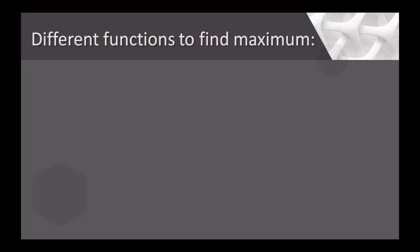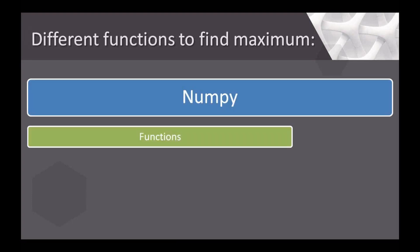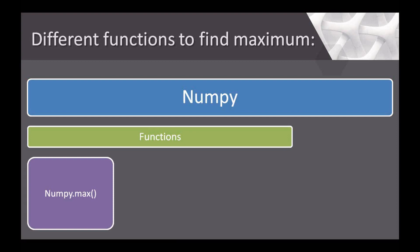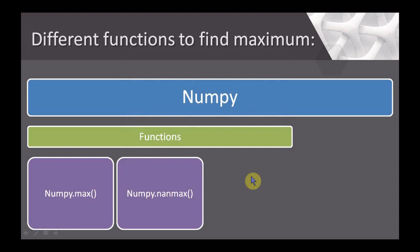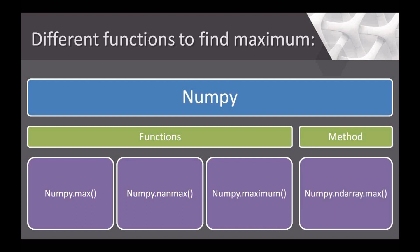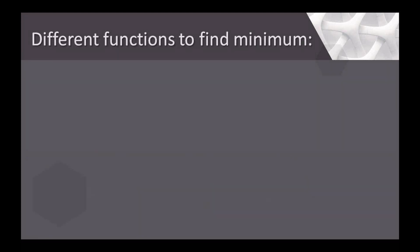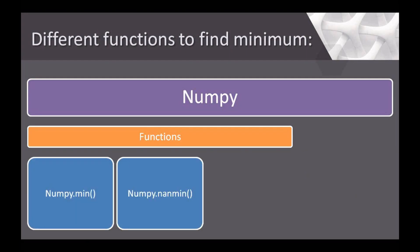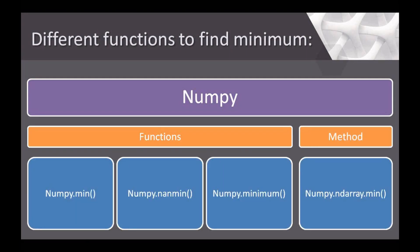First, I will show what are the different functions available with NumPy to find out the maximum in a NumPy array. The first one is the max function, the second one is the nanmax function, and the third one is the maximum function. In addition to these functions, the NumPy ndarray object also has a max method. In the same way, we have three functions and one method associated with the NumPy library to find out the minimum value in an ndarray. Now, I will show the use of all these functions using the Jupyter notebook.